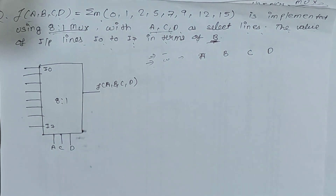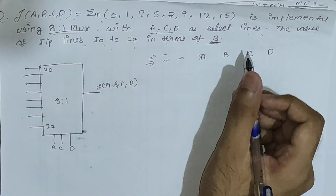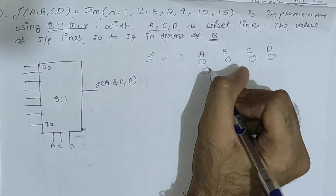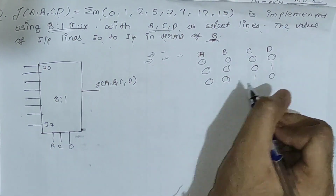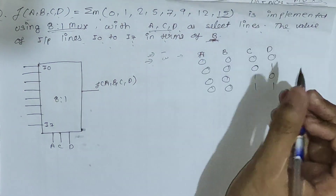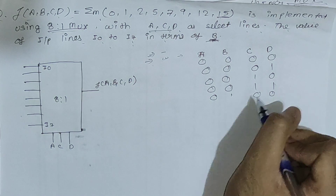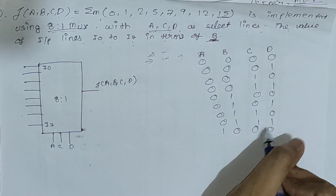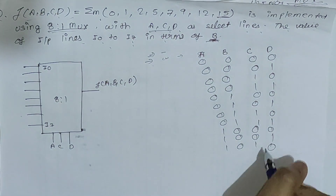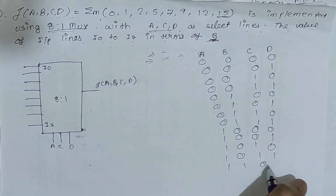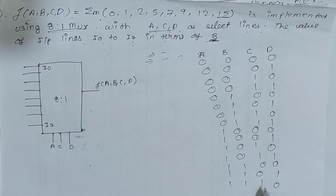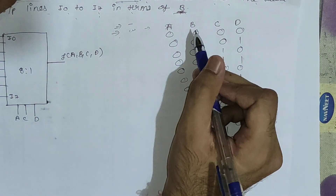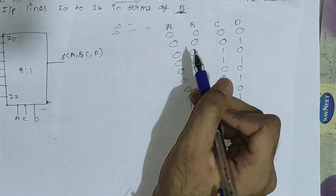First, we draw a truth table for the 4 variables a, c, d, and b. The truth table lists all 16 combinations (minterm 0 through 15), filling in all binary combinations of a, c, d, and b systematically.